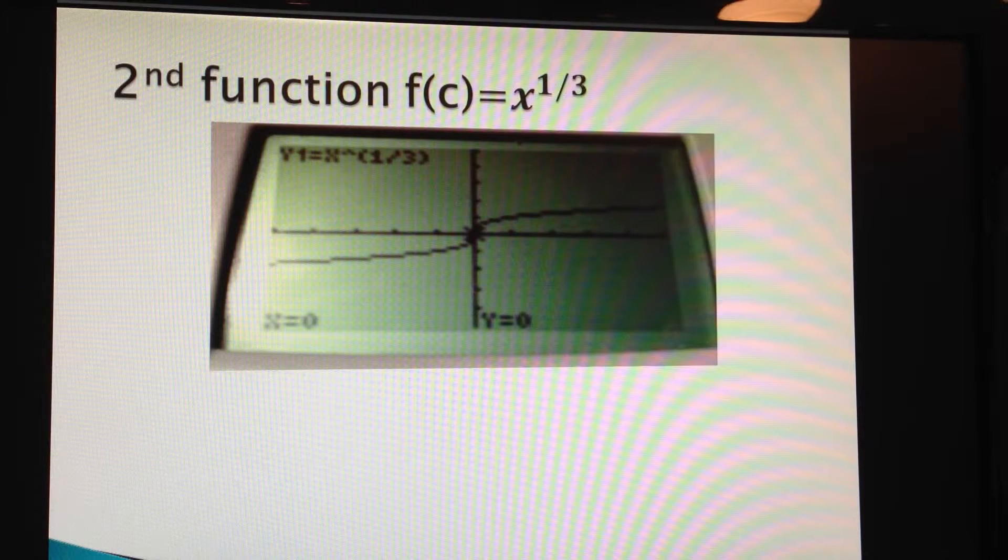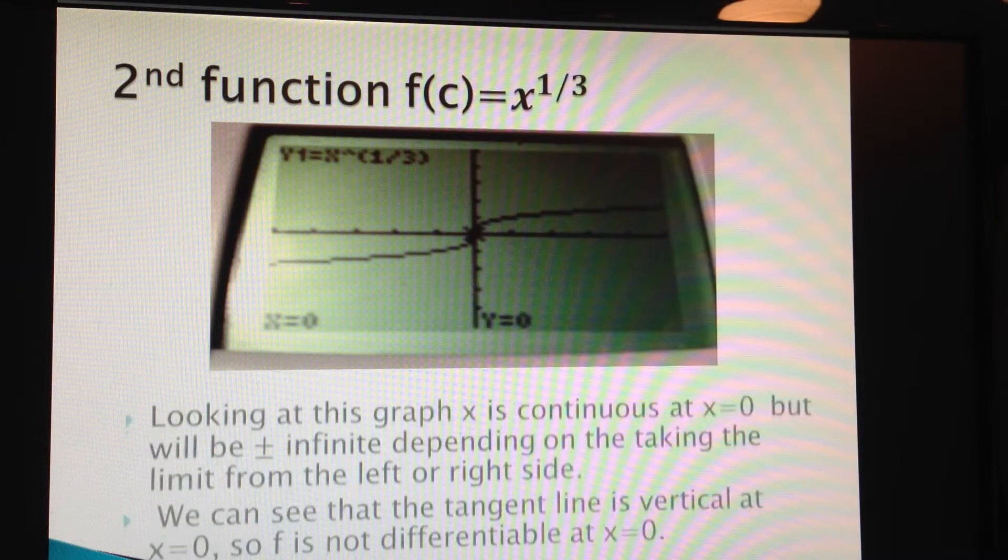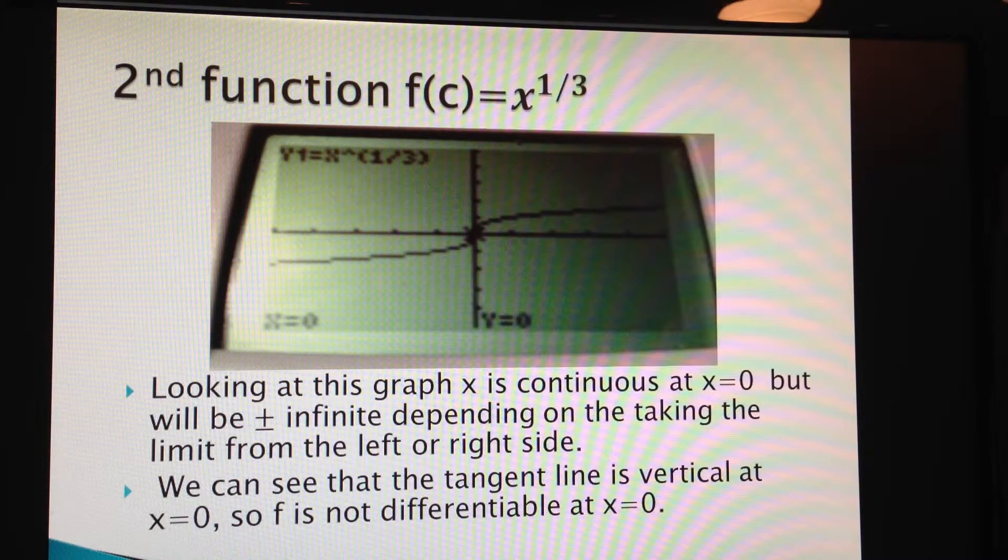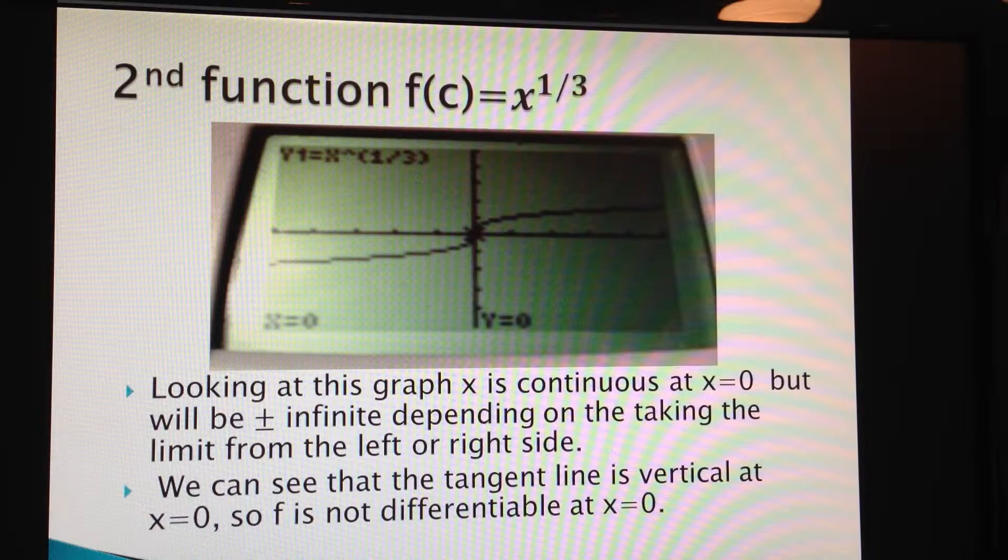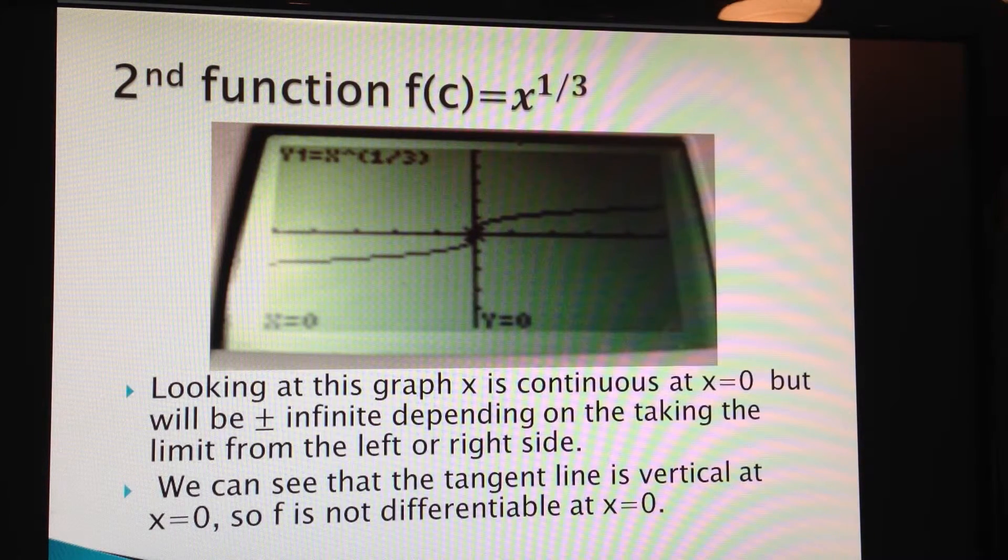The second function we're going to look at is f of c equals x to the power of 1 third. Looking at this graph, x is continuous at x equals 0, but if we took the limit from the left or the right side, we would get positive or negative infinity.